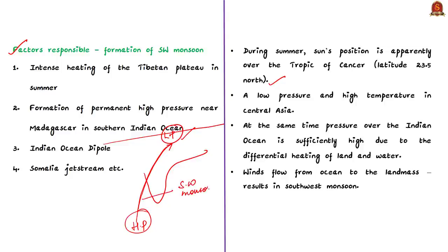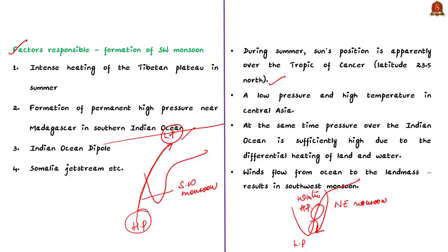During October to February, a high pressure system develops over the landmass and low pressure develops in the ocean, causing winds to move from land to sea — this is called northeast monsoon. The northeast monsoon brings rainfall mainly to the south-eastern coast of India like Tamil Nadu and parts of Andhra Pradesh.